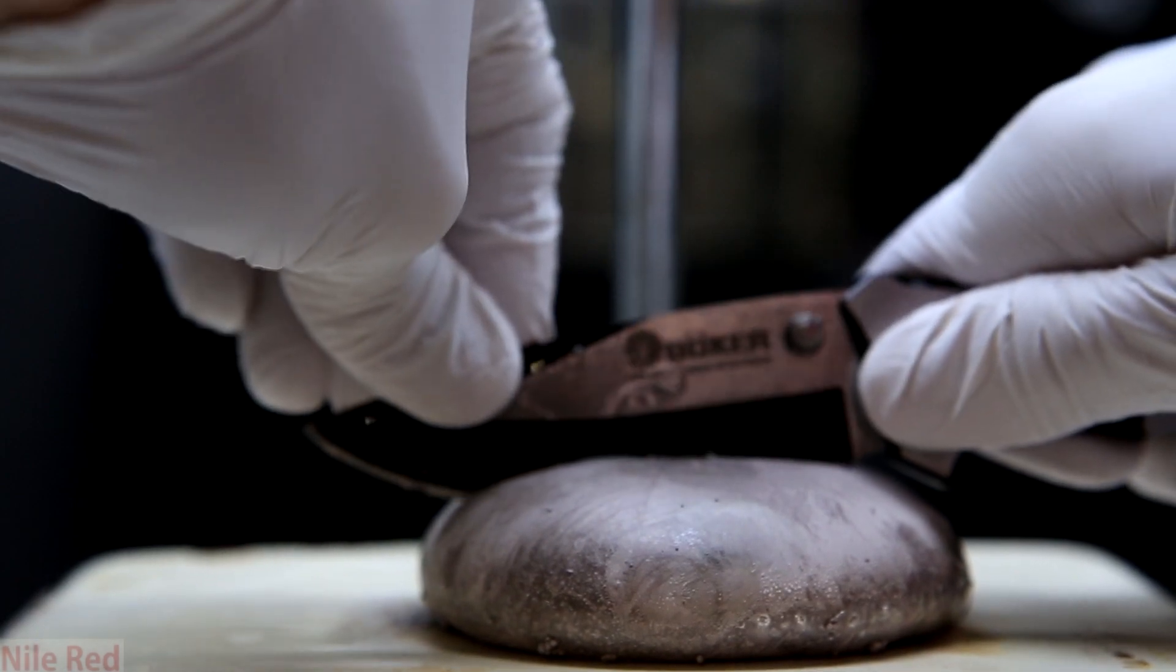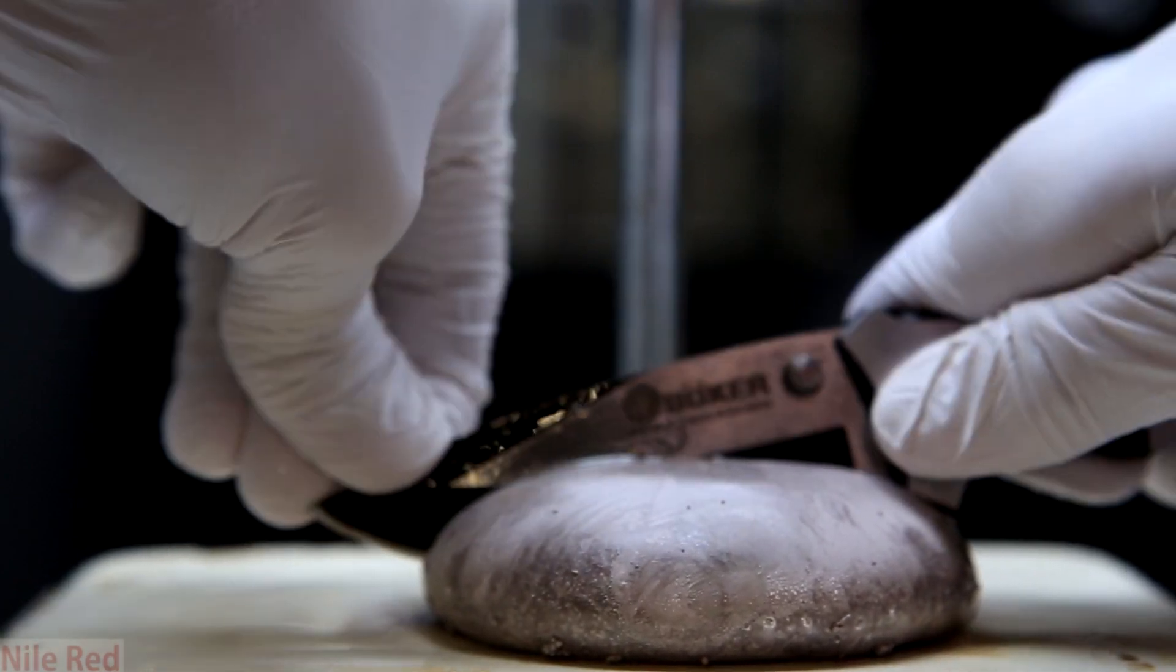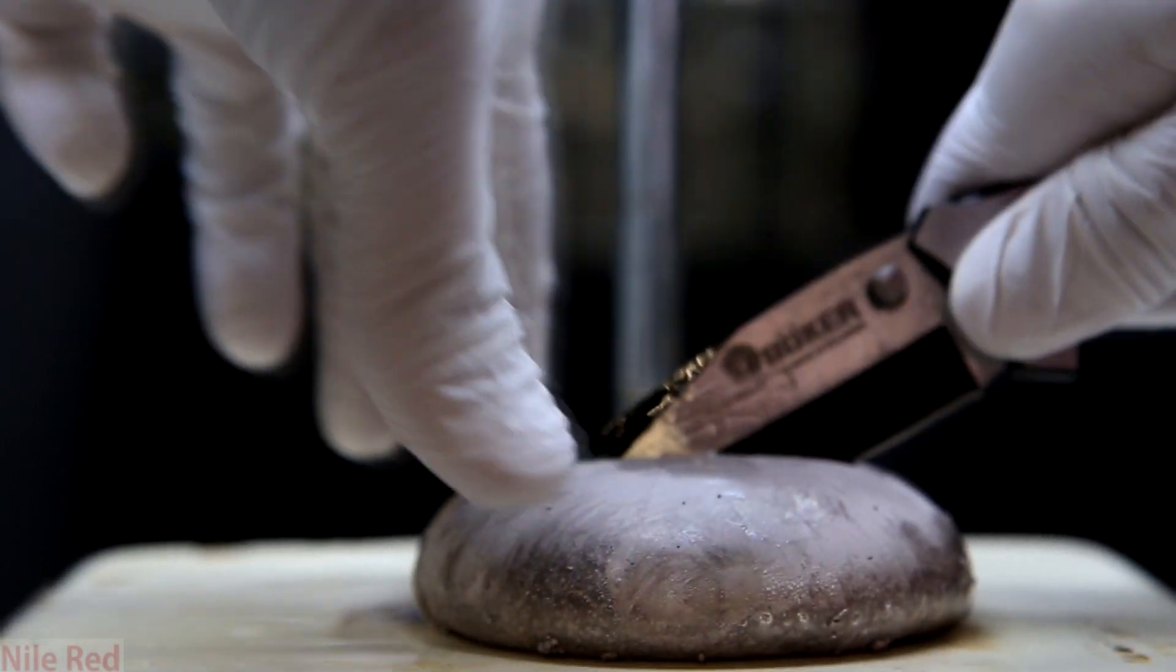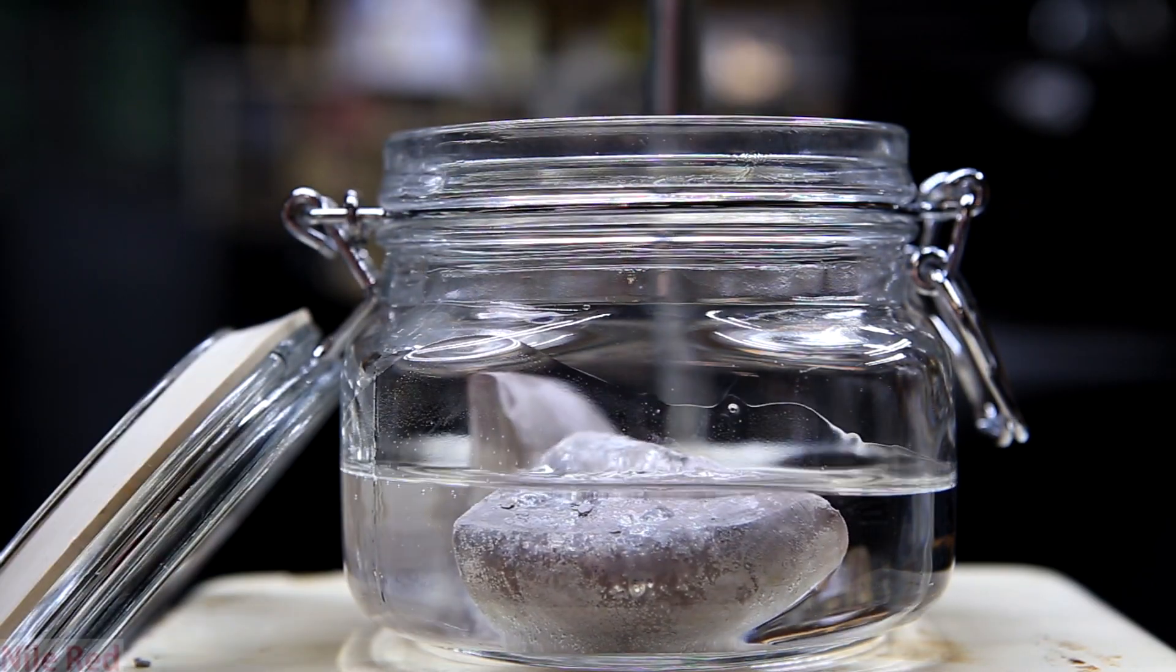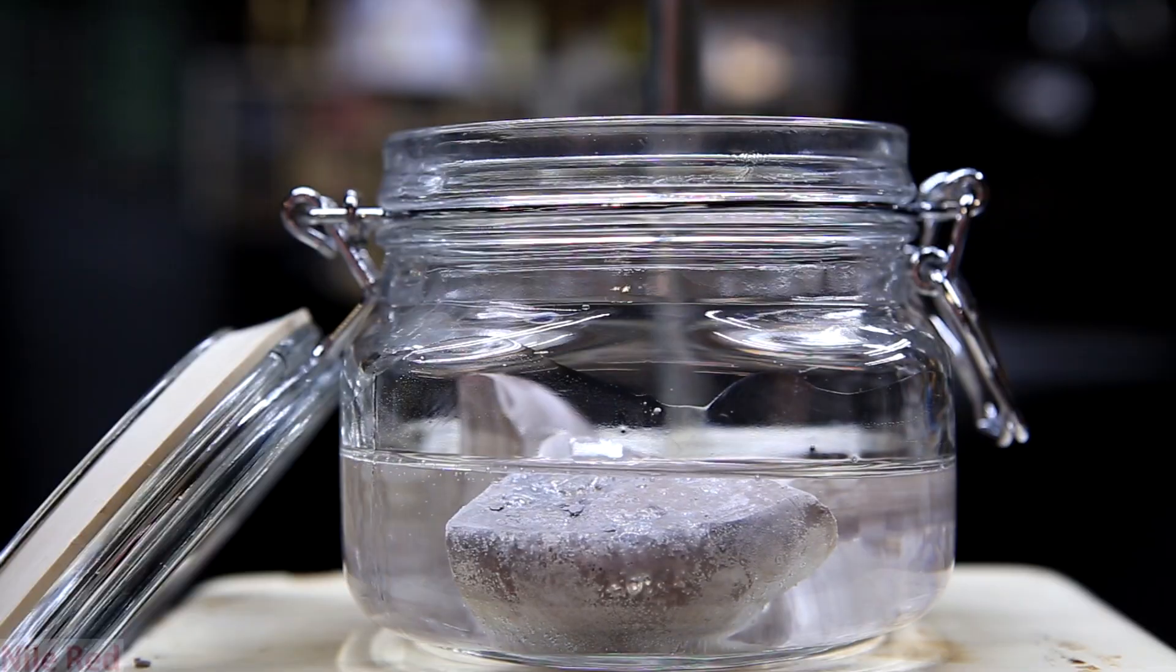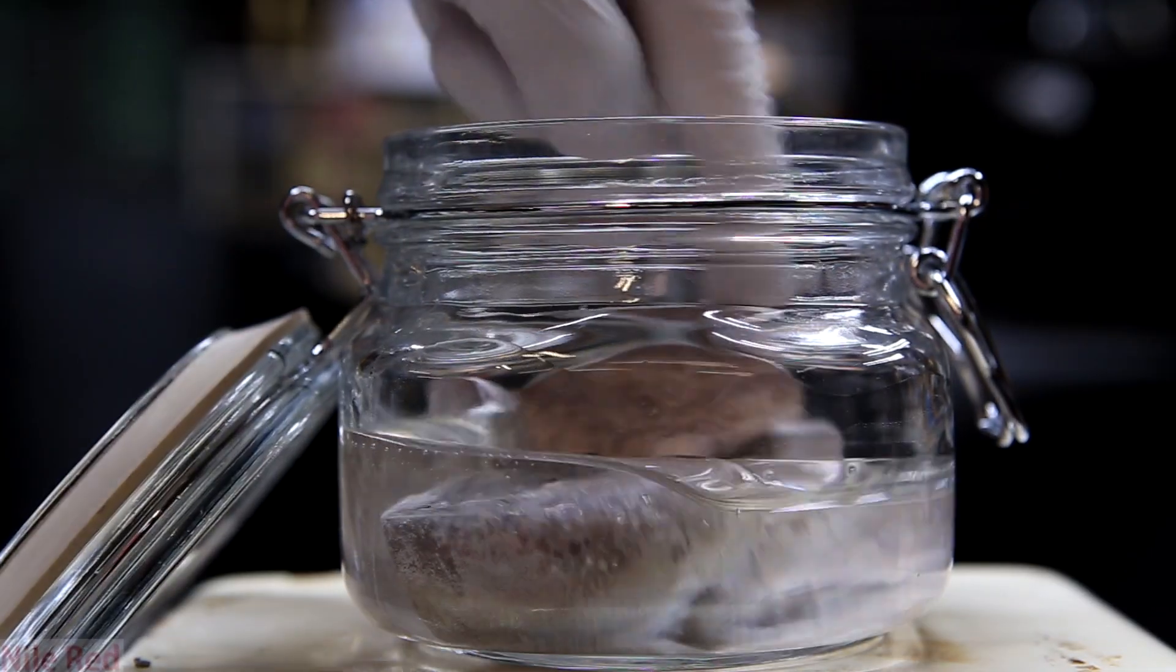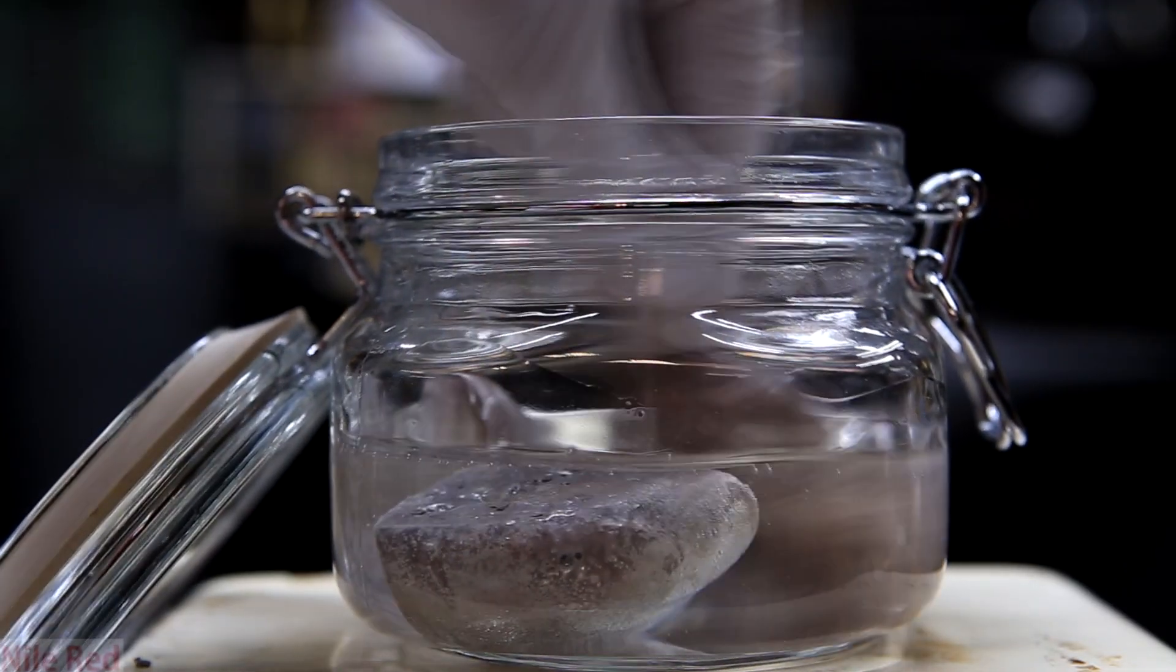And then, just like before, I cut the large piece of sodium into four equal-sized pieces. The four pieces are then placed into mineral oil. The glass jar that it's stored in is capable of an airtight seal. The jar is then topped off with mineral oil and it's clamped shut.